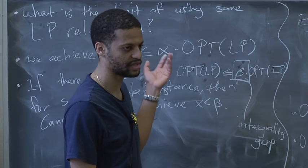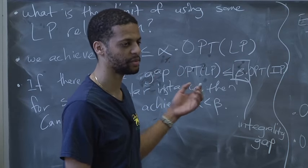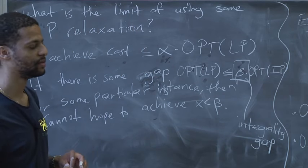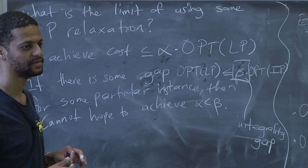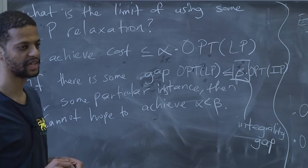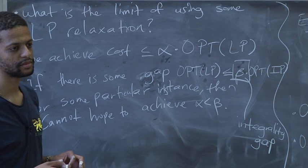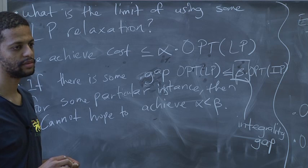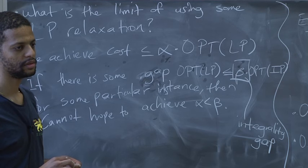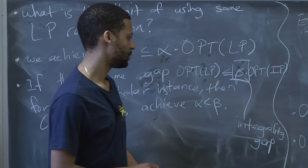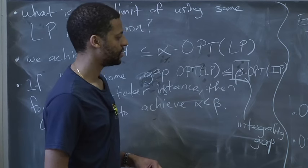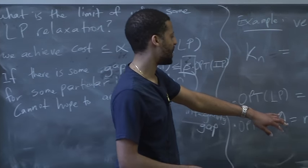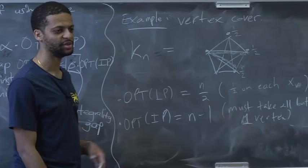For set cover, we parameterize by n and ask: as a function of n, what's the worst gap you can have? We're going to give an example where you're off by a log n. For vertex cover, as n gets big, the gap is approaching 2.